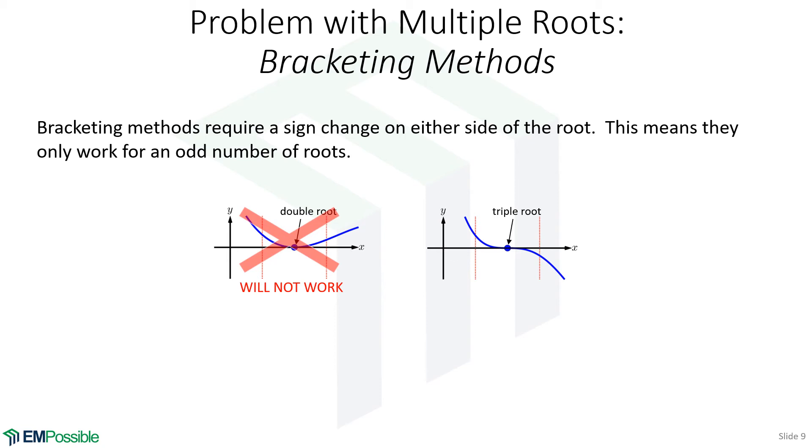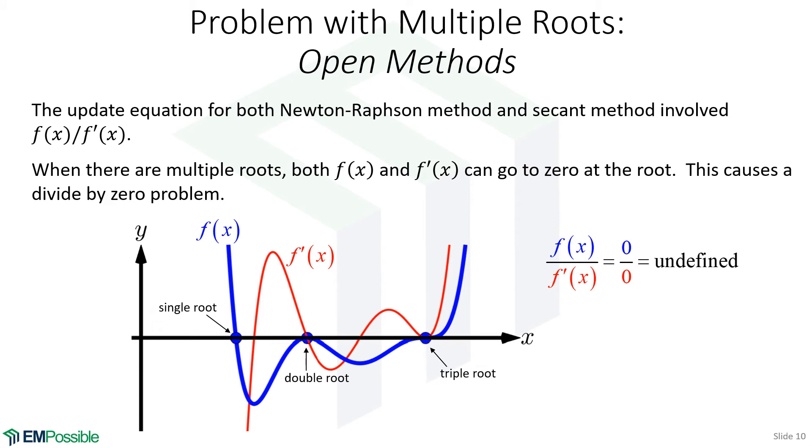Now with root finding methods, there are problems with multiple roots. First we'll look at the bracketing methods. Bracketing methods requires that the function changes sign on either side of the root. So already we know that a bracketing method can really only be applied to an odd number of roots. Open methods will have an update equation to keep updating our estimate. In the Newton-Raphson method, we will have to evaluate the function divided by its derivative. If we have multiple roots, anything other than a single root, we're dividing by zero and we'll get undefined. So these multiple roots also don't work for open methods for that reason.